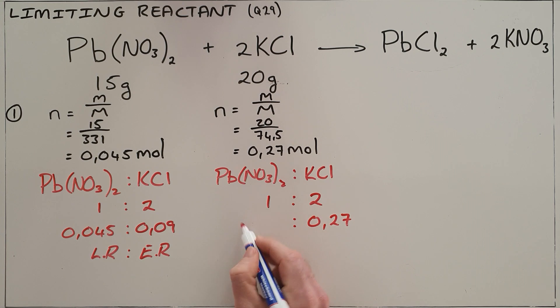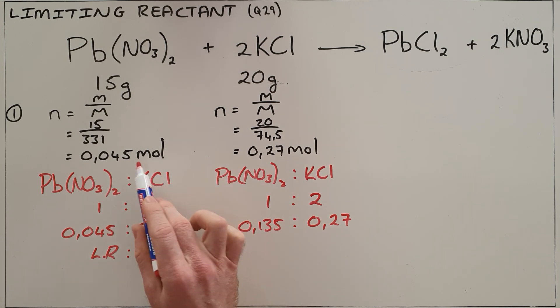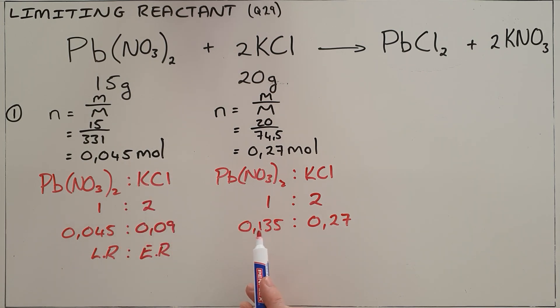Which would mean that we would require 0.135 moles of lead nitrate, and we can very clearly see that we do not have 0.135 moles of lead nitrate, which once again shows us that lead nitrate must be the limiting reactant and potassium chloride must be our excess reactant. You are not required to do both of these.